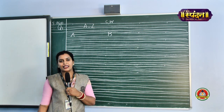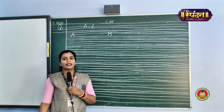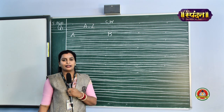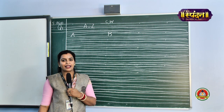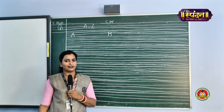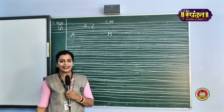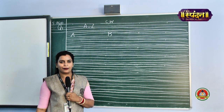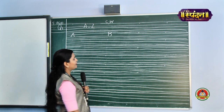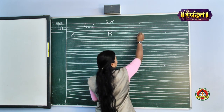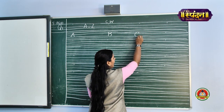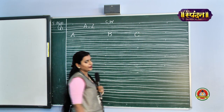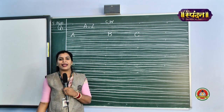Our next alphabet is C. C stands for car, C stands for carom, C stands for cricket, and C is for caramel. Come on, let us write alphabet C. Start from the pink line, bring it to the second black line. Very easy. This is alphabet C.